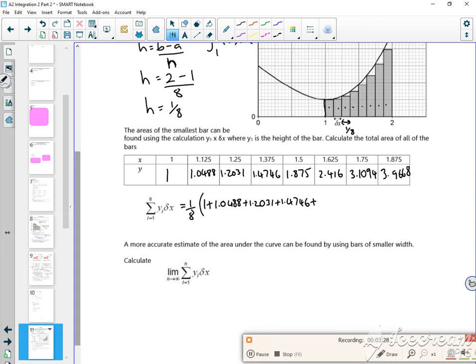All right, so Adam has just come now. So let me pause that. Right, so 2.416, 3.1094, 3.9668 gives me a total of roughly 2.0117.